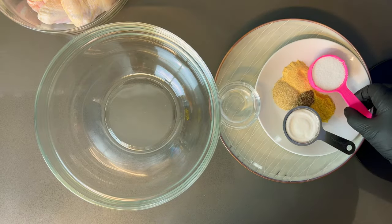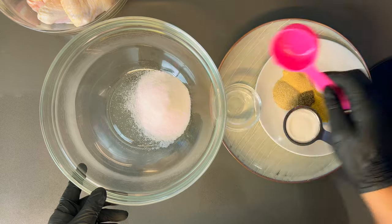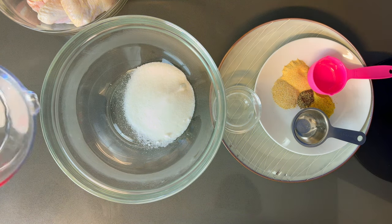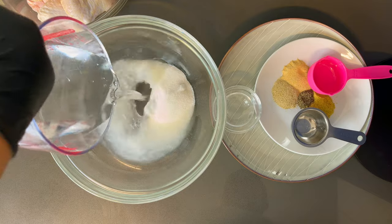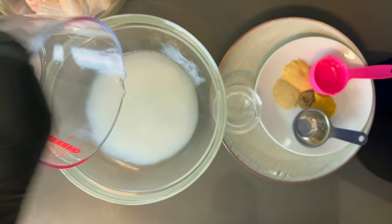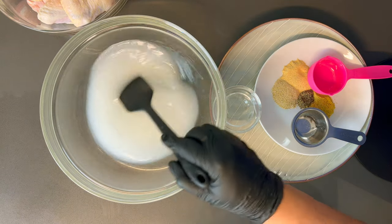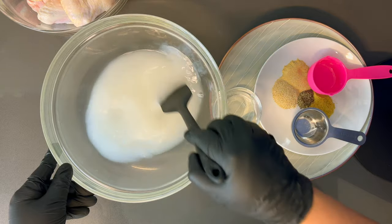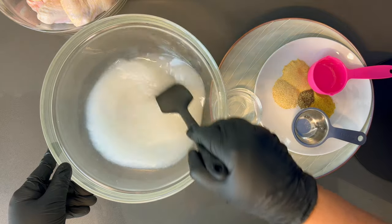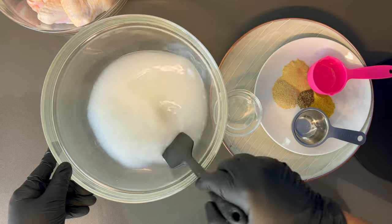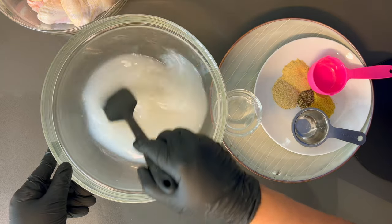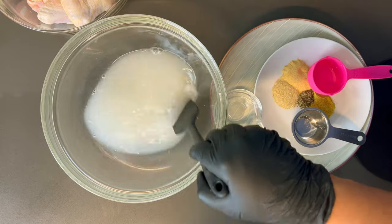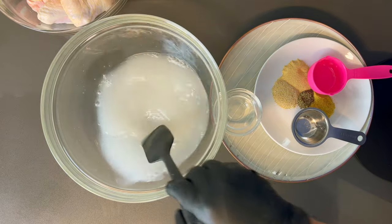You want to start by adding your sugar and your salt, then get some warm water just so this can dissolve. Mix this up until you don't feel any grains in the bottom of your bowl, so you don't hear that scraping sound because the water was warm enough to dissolve the crystals of the sugar and salt.